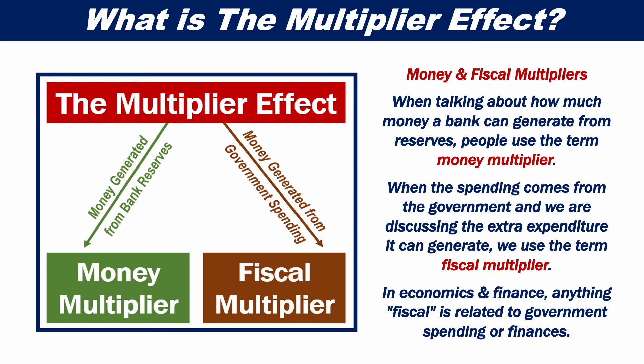When talking about how much money a bank can generate from reserves, people use the term money multiplier. When the spending comes from the government and we are discussing the extra expenditure it can generate, we use the term fiscal multiplier. In economics and finance, anything fiscal is related to government spending or finances.